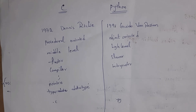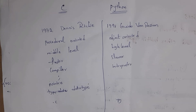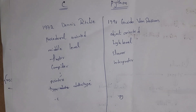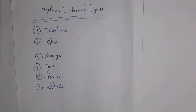In C, every statement requires a semicolon, whereas in Python there is no need. C supports pointers but Python does not. In C you must declare the data type, e.g., int a = 10, whereas in Python just write a = 10. C files are saved with a .c extension; Python files are saved with a .py extension.